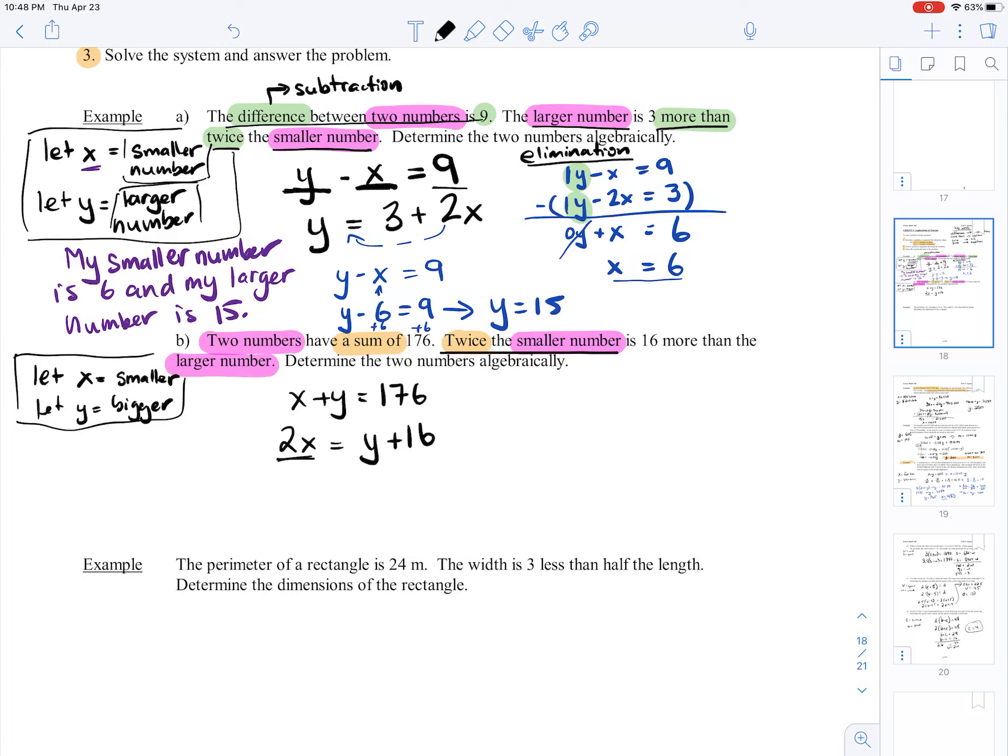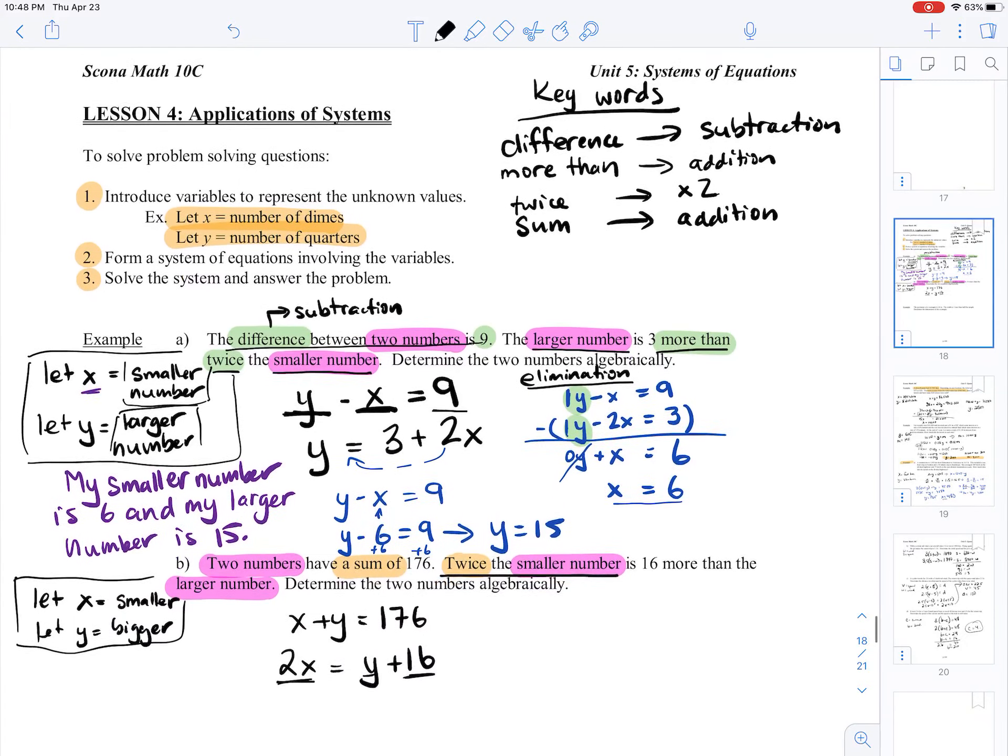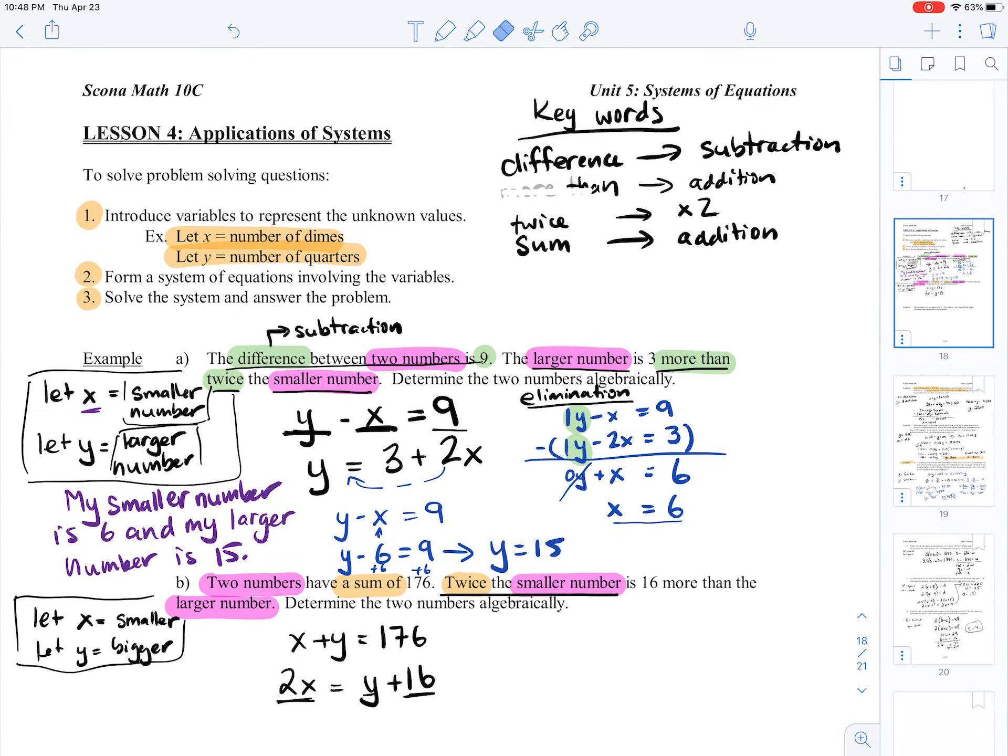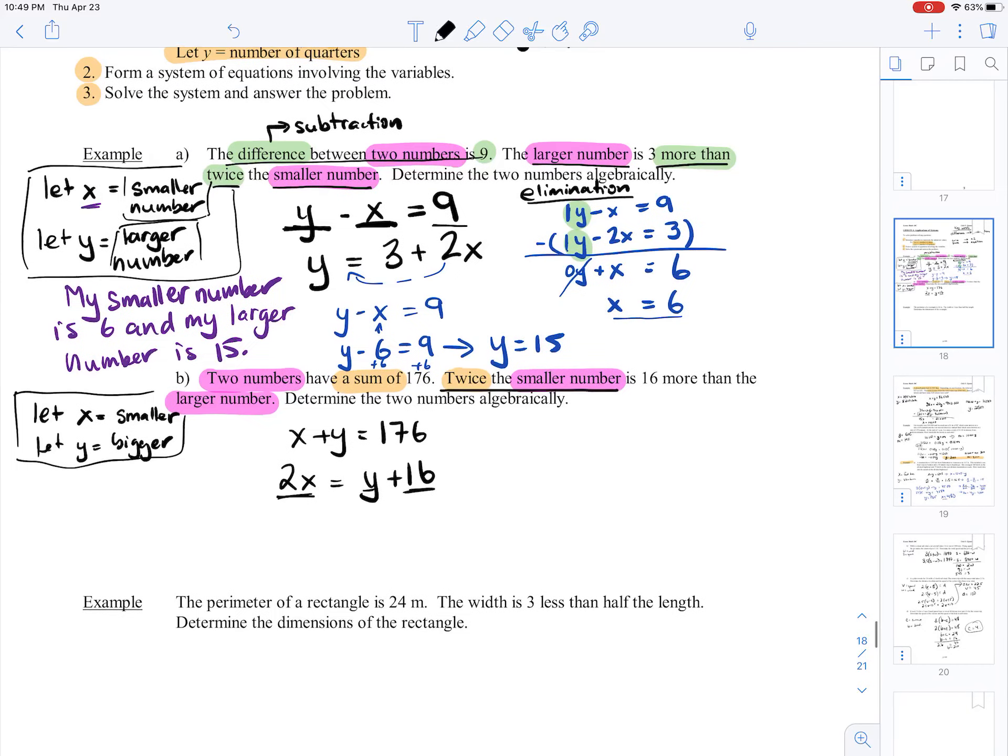Twice the smaller number is 16 more than the larger number - it's bigger than the larger. The larger number needs to have 16 added to it to get to 2x. So I'm actually going to revise our notes here and just take out 'more than equals addition' because I don't think that's quite always true. It depends on how you perceive the question, and hopefully you can think through the question which way it should go each time.